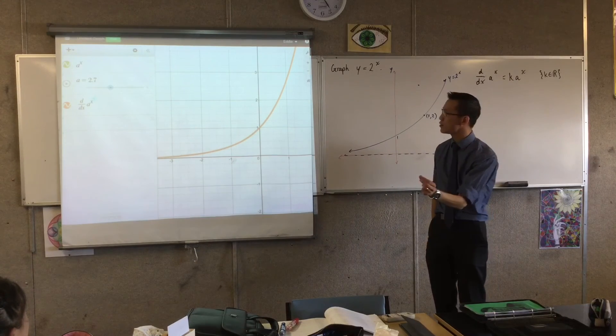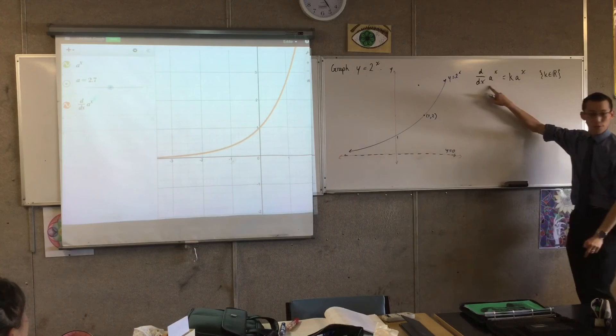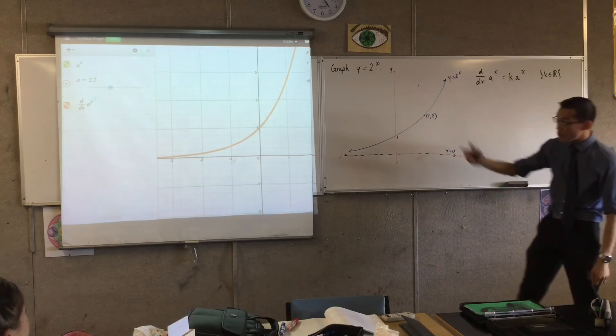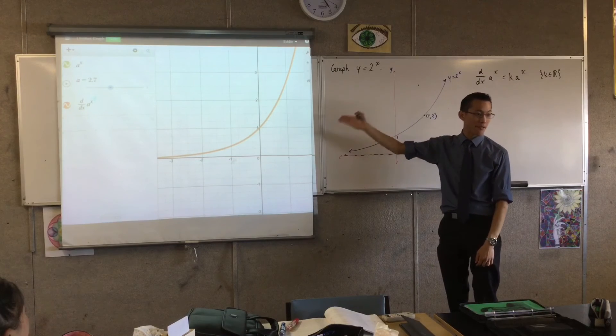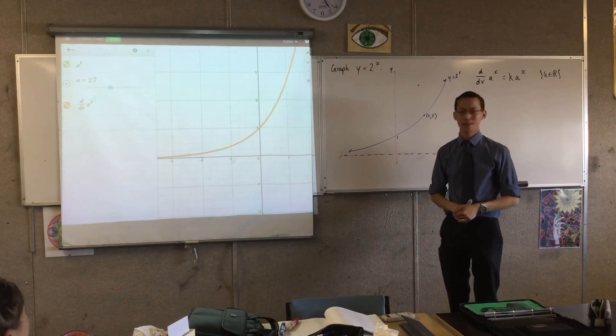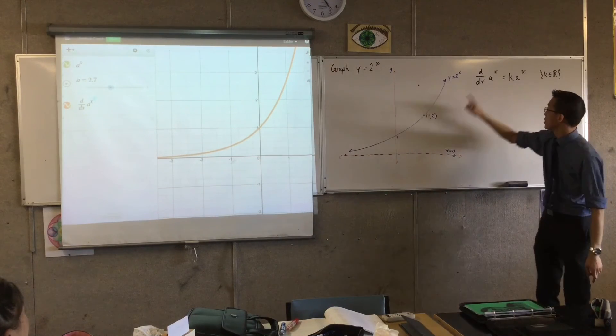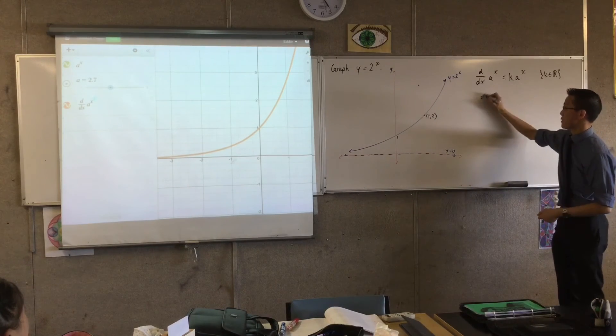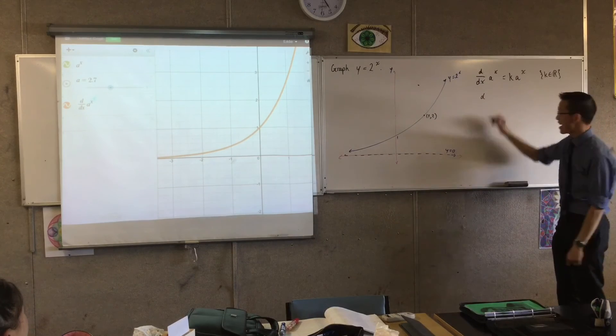Now, I've only done it to the nearest tenth unit, so that's why I can't get the actual number that I'm after. But those are pretty bang on. Right? There is a particular value where, when you differentiate, you don't get back something pretty close. You get back the actual graph itself that you started with. That's a particular number. Some value of a. We give that number the name because it's all about exponentials. We call it e.